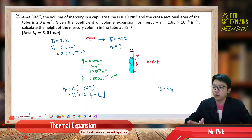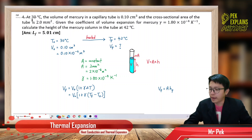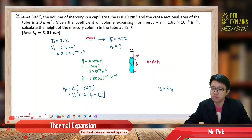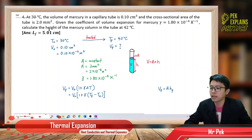Now question 4. At 30 degrees Celsius, the volume of mercury in a capillary tube is 0.1 cm³ and the cross-sectional area of the tube is 2 mm². Given the coefficient of volume expansion for mercury, gamma equal to 1.8 × 10⁻⁴ per kelvin, calculate the height of the mercury column in the tube at 42 degrees Celsius.